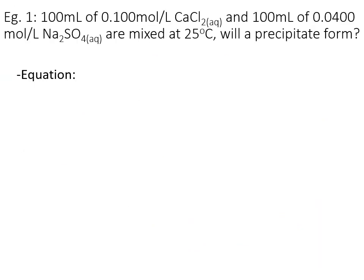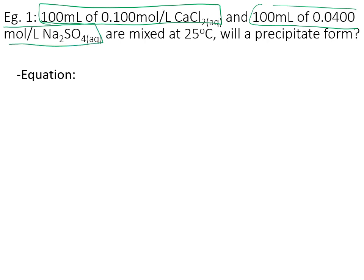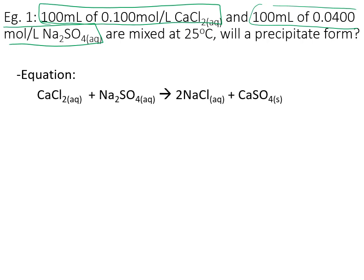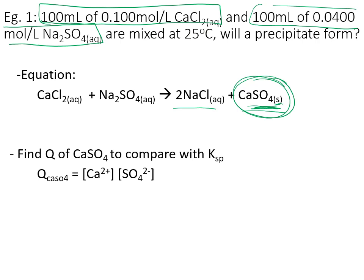Let's look at a calculation. We have a certain concentration of calcium chloride and a certain concentration of sodium sulfate, and we're mixing them together to see if a precipitate forms. First, write out the double displacement reaction and identify the two products. Looking at a Ksp or solubility table, calcium sulfate is the least soluble of the two products — more likely to precipitate than sodium chloride.